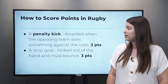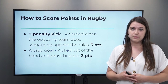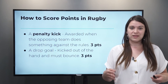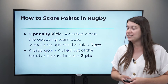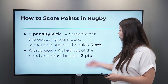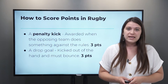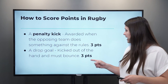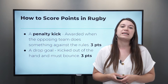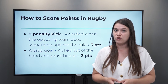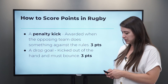How else can you score points? A penalty kick is awarded when the opposing team does something that is against the rules, so then the other team can have a penalty kick, and if you score, then you earn three points. And finally, a drop goal is kicked out of the hand and must bounce on the ground, and if this happens, then you can earn your team three points as well.